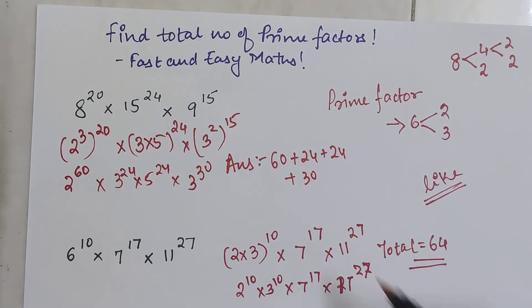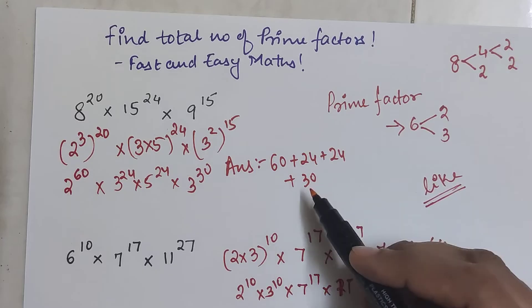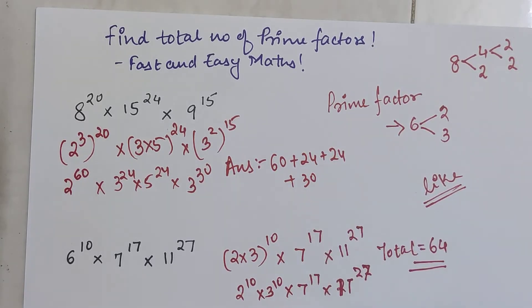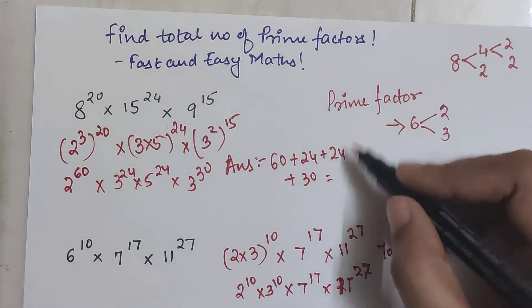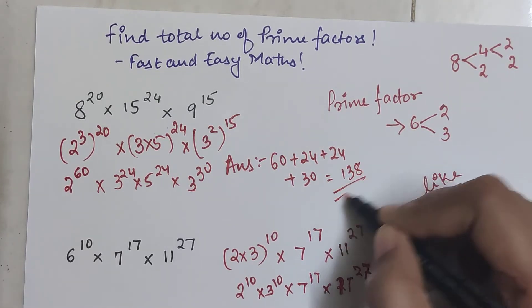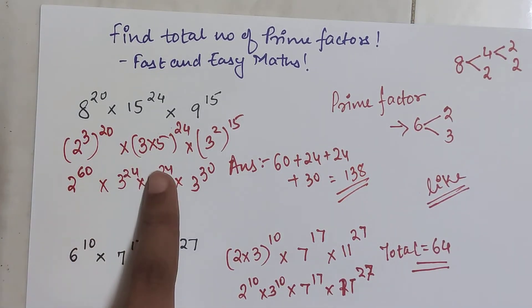So 24 plus 24 is 48, 48 and 90. So when you add 90 to 48, you will get the final answer as 138. That is your answer for this particular question.